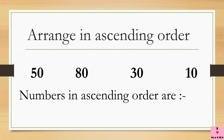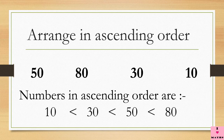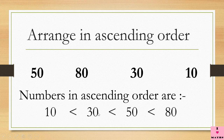So let us see how we write it. 10 is the smallest so the mouth is closed towards the side of 10 and open towards 30. Out of 30 and 50, 30 is smaller so the mouth is closed towards 30 and open towards 50. Out of 50 and 80, the mouth is closed towards 50 and open towards 80.